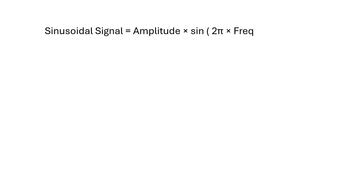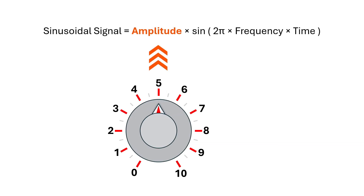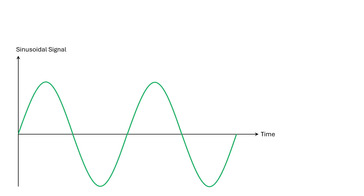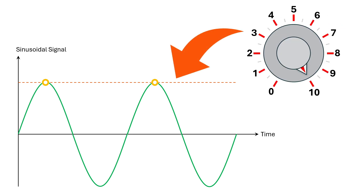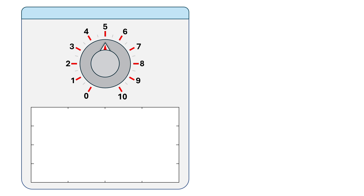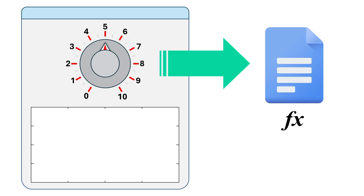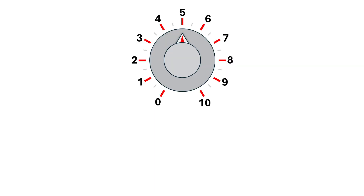A sinusoidal signal can be represented as: amplitude × sin(2π × frequency × time). We want the amplitude part to be controlled by the knob. There are two components in our App Designer: the knob and the UIAxes. We have to write a callback function for the knob, since we are controlling the amplitude of the sinusoidal signal using it.